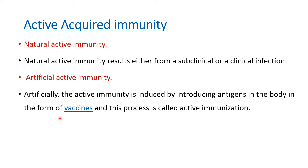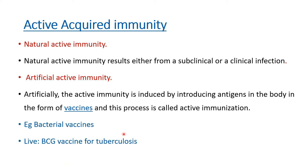Examples of vaccines include bacterial vaccines like BCG vaccine, given for tuberculosis, and TAB vaccine, given for typhoid. The main principle is that these vaccines contain low-dose antigen which, when introduced into the body, elicits an immune response, conferring immunity against that particular antigen. In active acquired immunity, the body itself is producing the antibodies.